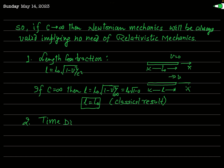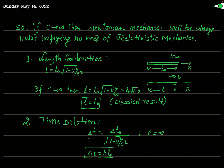Similarly, consider the case of time dilation. In accordance with the time dilation formula of special relativity, the time interval ΔT = ΔT₀ / √(1 − V²/C²), where ΔT₀ is the proper time interval and ΔT is the observed or dilated time. If C equals infinity, you can check that ΔT simply equals ΔT₀ — there is no time dilation. In every frame, the time interval of an event when measured will be the same.